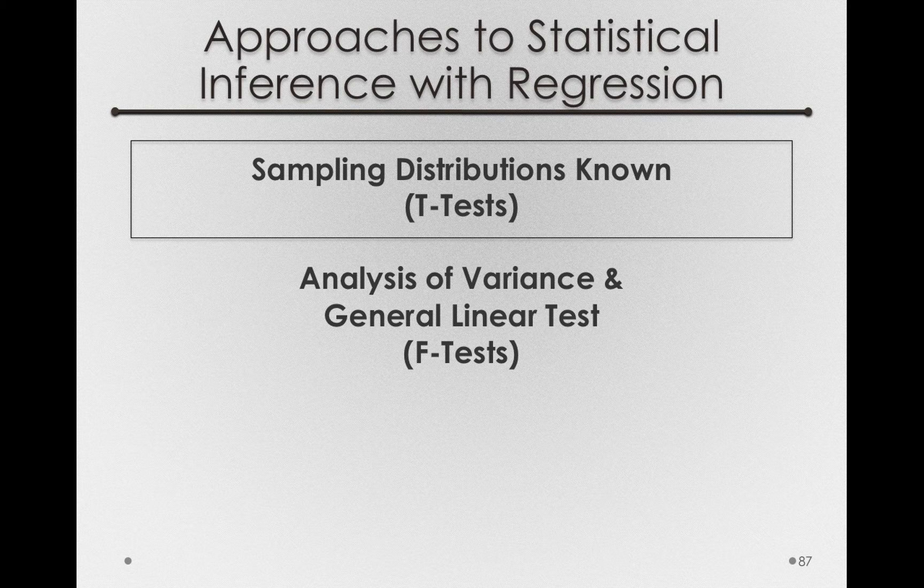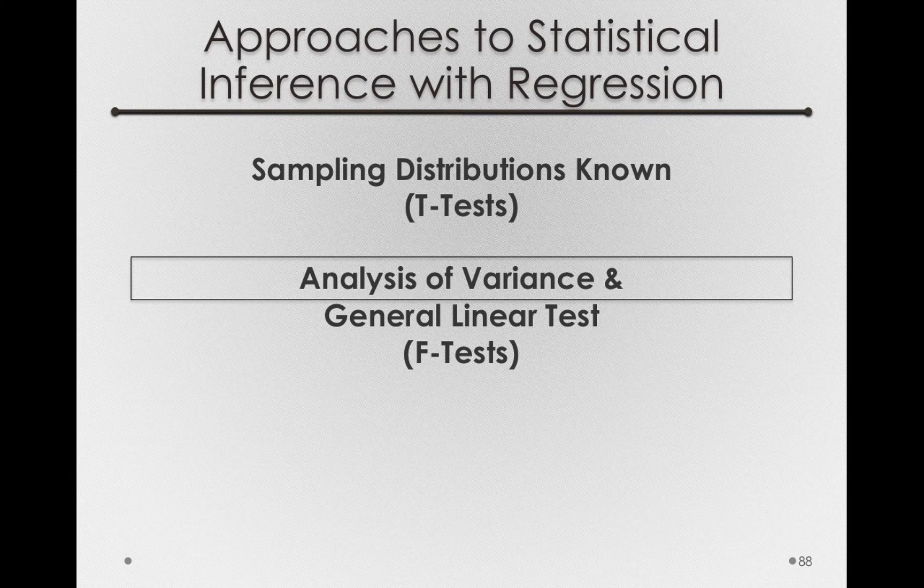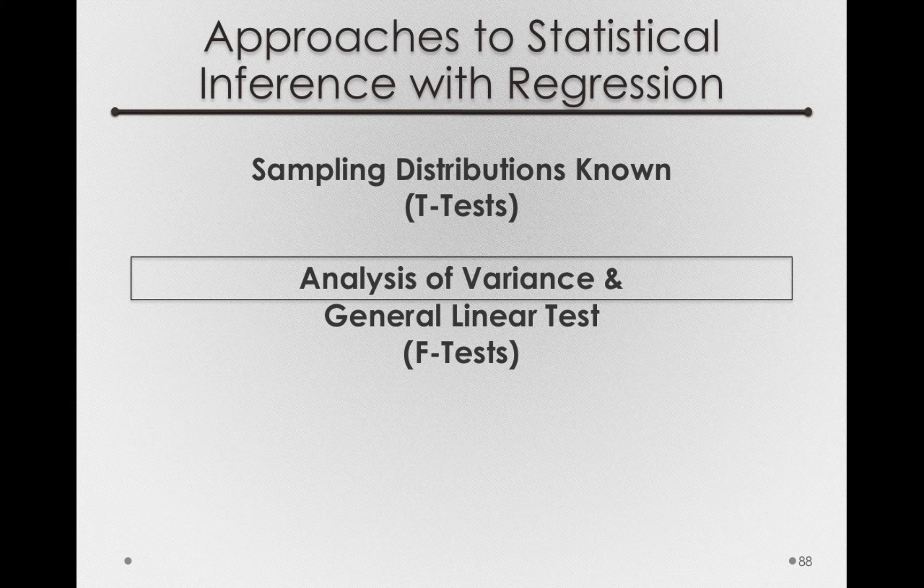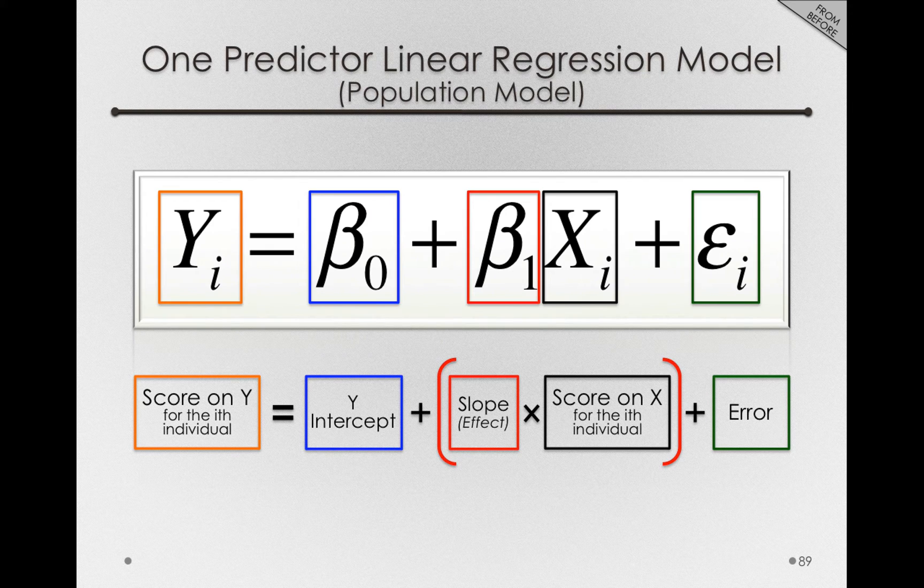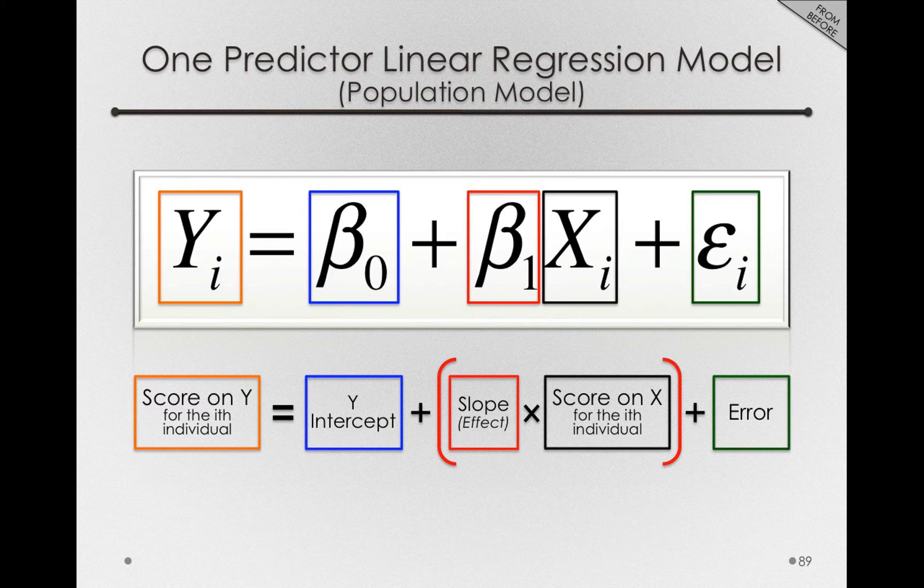Now that we've seen how to form t-tests, let's actually use the analysis of variance and general linear tests to form similar hypothesis tests about the regression parameters. In our one-predictor linear regression model, our principal interest will be on that slope parameter. That is, estimating whether in the population we have evidence the slope between y and x is different from zero.